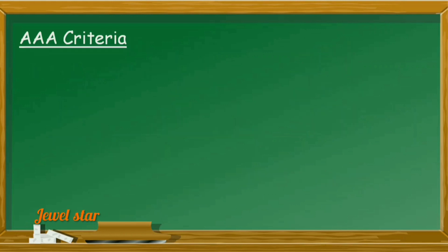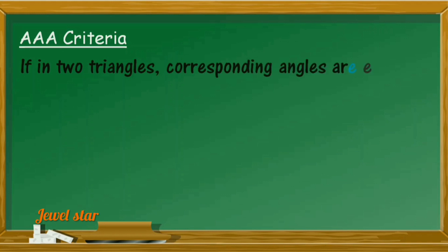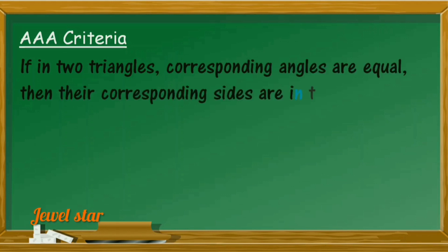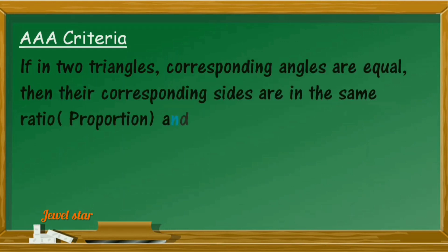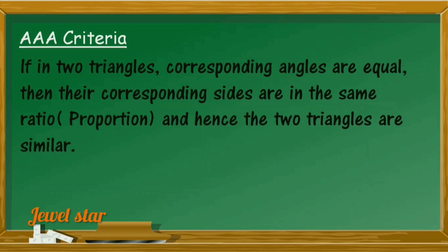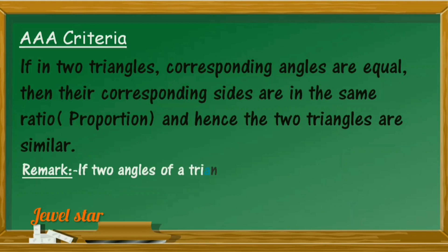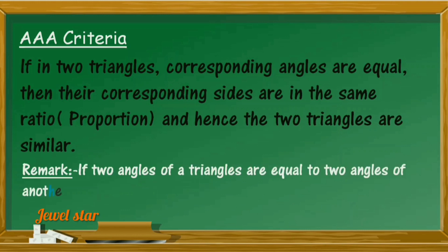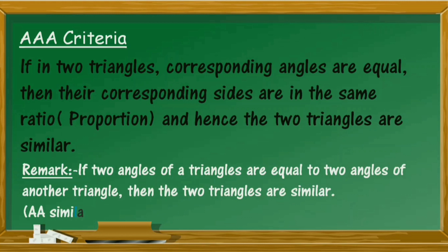AAA similarity criteria states that if in two triangles, corresponding angles are equal, then their corresponding sides are in the same ratio, and hence the triangles are similar. Also, if two angles of a triangle are equal to two angles of another triangle, then the two triangles are also similar, because by the angle sum property, their third angle will also be equal. So, we can use AA similarity criteria instead of AAA.